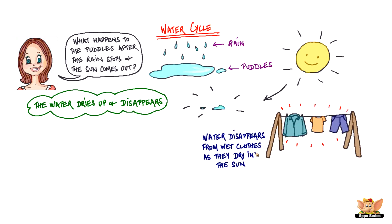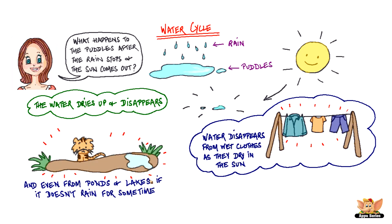Similarly, water disappears from wet clothes as they dry in the sun, and even from ponds if it doesn't rain for some time. So where does all this water go?